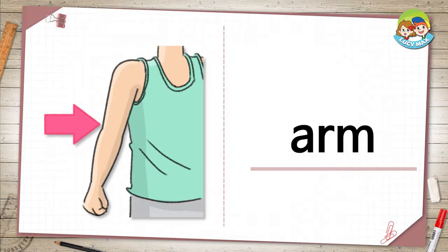The next word is arm. The arrow in the picture is pointing to an arm. People have two arms — one is on the right, and one is on the left.